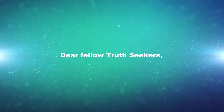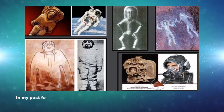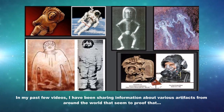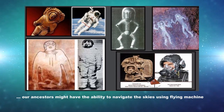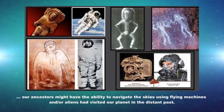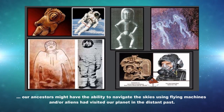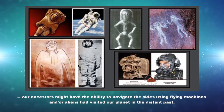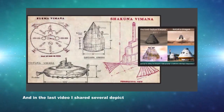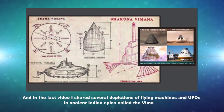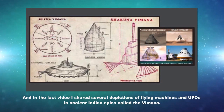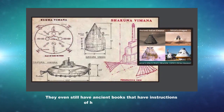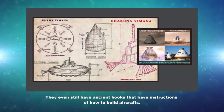Dear Fellow Truthseekers, in my past few videos I have been sharing information about various artifacts from around the world that seem to prove that our ancestors might have had the ability to navigate the skies using flying machines, and or that aliens had visited our planet in the distant past. In the last video I shared several depictions of flying machines and UFOs in ancient Indian epics called the Vimana. They even still have ancient books with instructions on how to build aircrafts.